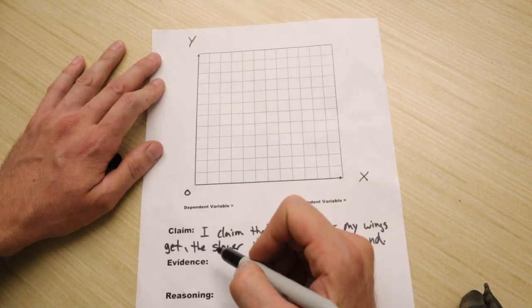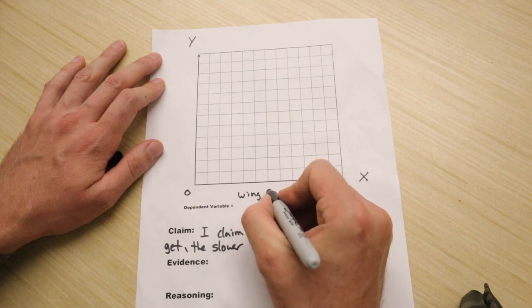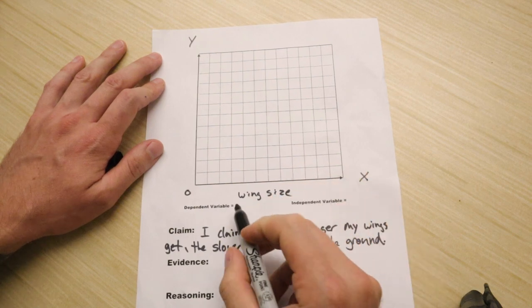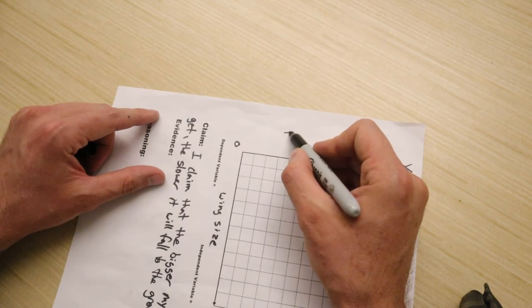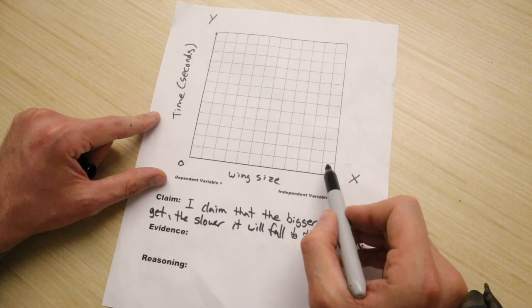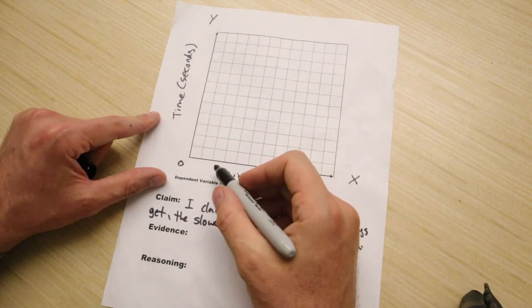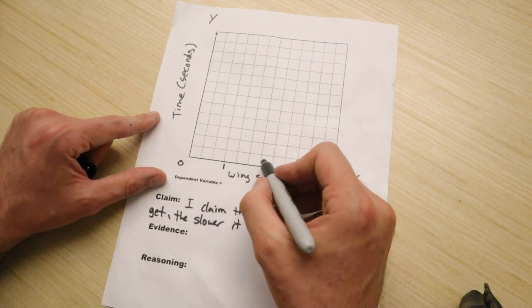So my x-axis, I want this to be wing size. This is our variable. We can manipulate this. My y-axis, I want to be time in seconds. Okay, so there's 12 squares around here. I have four wing sizes. So maybe I'll skip every three squares. So 1, 2, 3, wing size 1, 1, 2, 3, wing size 2, 1, 2, 3, wing size 3, 1, 2, 3, wing size 4.